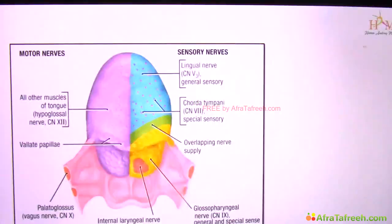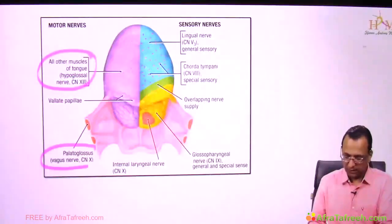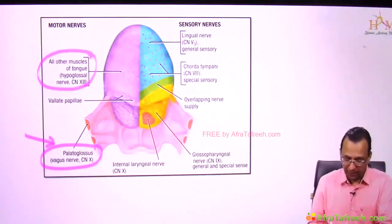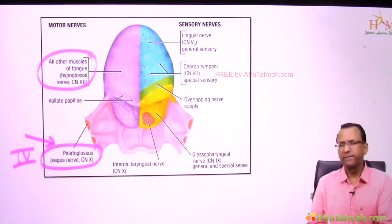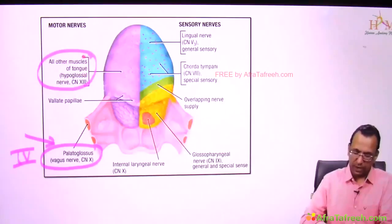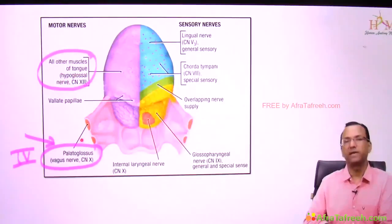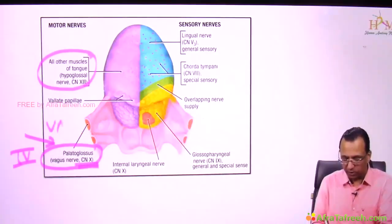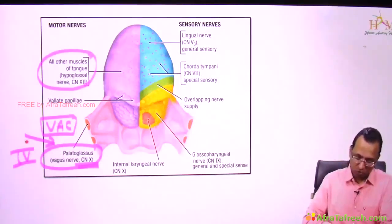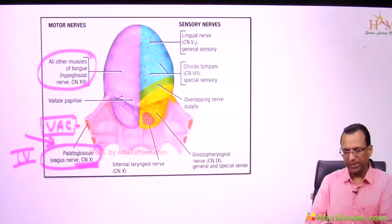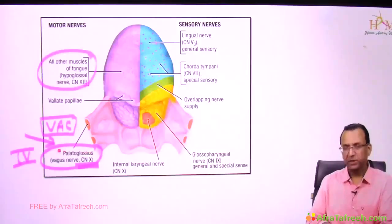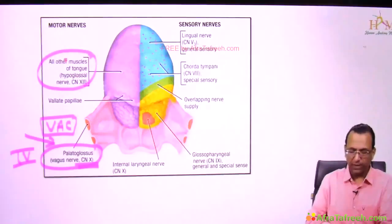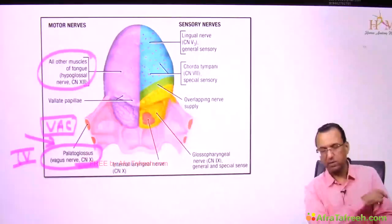Almost all muscles of the tongue are supplied by the twelfth nerve, except one — the palatoglossus. The palatoglossus is actually a muscle of the palate as well, so it is supplied by the nerve of the palate, which develops in the fourth arch. This is the vagus accessory complex. Fourth and sixth arch muscles are supplied by the vagus accessory complex — the tenth and eleventh nerves — not the twelfth nerve.